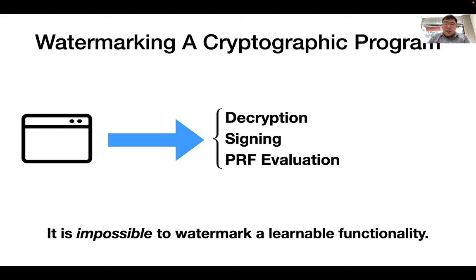We hope to have watermarking schemes for general functionalities; however, as shown by Cohen et al. in 2016, it is impossible to watermark a learnable functionality. A natural class of non-learnable functionalities are the cryptographic ones, such as the decryption algorithm, the PRF evaluation algorithm, and so on. So in this area we mainly focus on watermarking schemes for cryptographic programs, and in this work we particularly focus on the evaluation algorithm of the PRF.